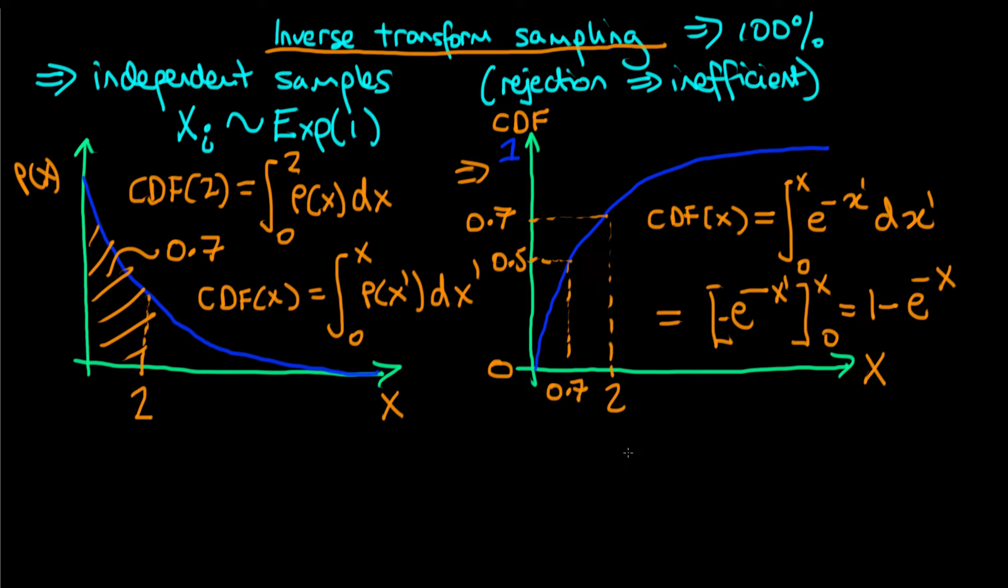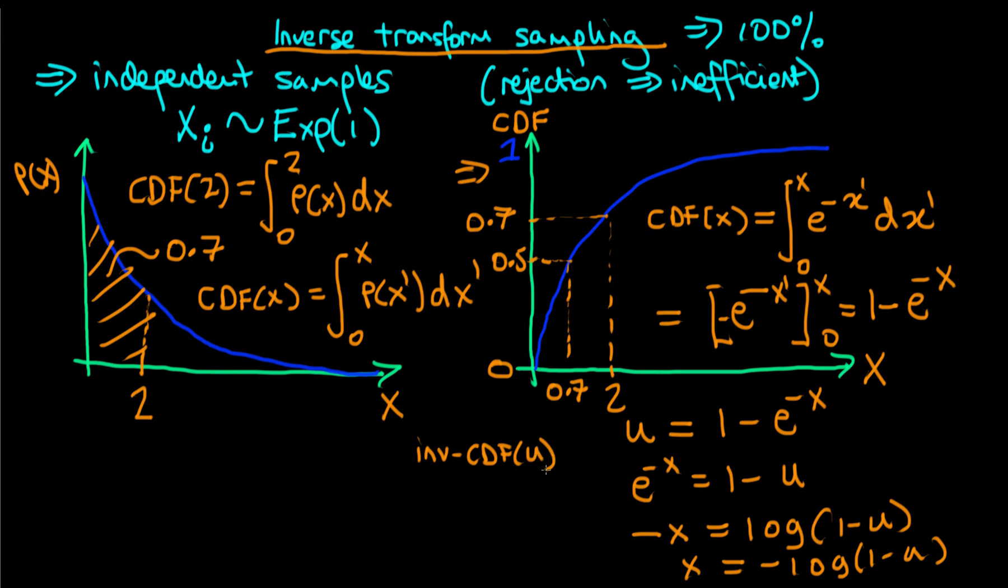How do we work out the inverse CDF? The idea is that we'd like to go from some number which I'm going to call u, which is equal to 1 minus e to the minus x, and we want to rearrange this to get an expression for x. We can do this in stages. We find that e to the minus x is equal to 1 minus u. If I take the log of both sides, I then just get minus x equals log, the natural log of 1 minus u, and hence we get a relationship that x is equal to minus log of 1 minus u. So our inverse CDF in this example for a particular value of u is just equal to minus log of 1 minus u.